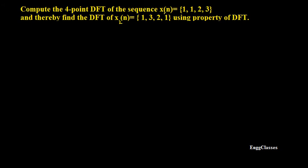Welcome to NG Classes YouTube channel. In this video we will consider a numerical on DFT. The task is to find the four point DFT of the sequence x1 of n which is equal to 1, 1, 2, 3, and thereby find the DFT of x2 of n which is equal to 1, 3, 2, 1 using a property of DFT. We have to find which property to use and then apply it.